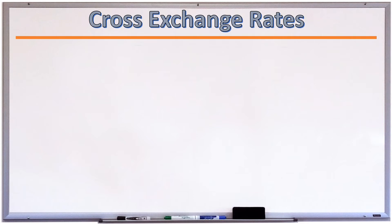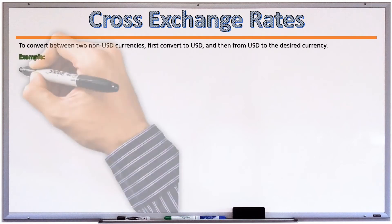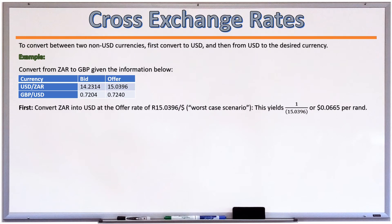Cross-exchange rates: Most exchange rate transactions are US-dollar-based. If one wished to do a transaction between two non-US-dollar currencies — with the exception of EUR/JPY, EUR/GBP, and EUR/CHF — one would need to convert the first currency to US dollars, then convert the US dollars into the desired currency. For example, for a ZAR/GBP trade, if the market provides USD/ZAR and GBP/USD quotes, we can calculate the implied ZAR/GBP exchange rate.